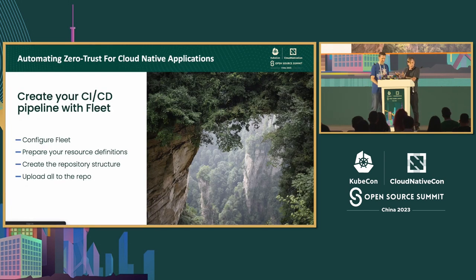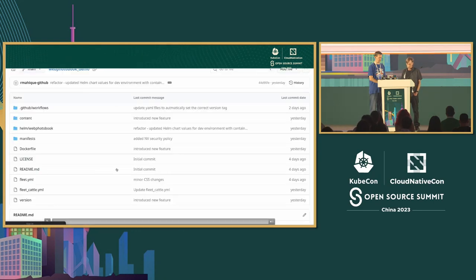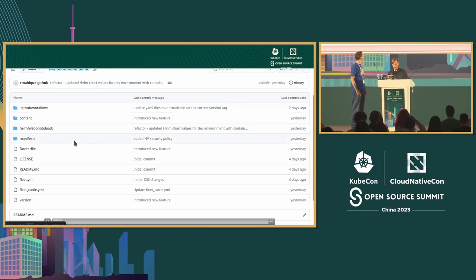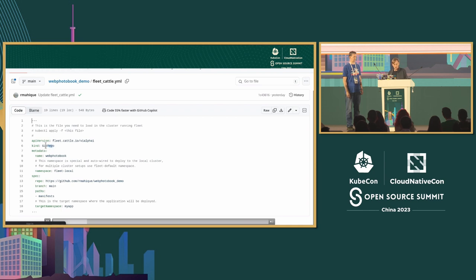We've created the profile, got our application sitting in a Git repo. Next we'll use Fleet to automatically deploy it on all downstream clusters. The first file is the Fleet cattle YAML, which gives instructions on how to monitor the Git repo, how often to check it, and what contents to execute. The kind is Git; you define the web app name, the namespace — Fleet local for single cluster, Fleet default for multi-cluster — the repo where code resides, and the branch.